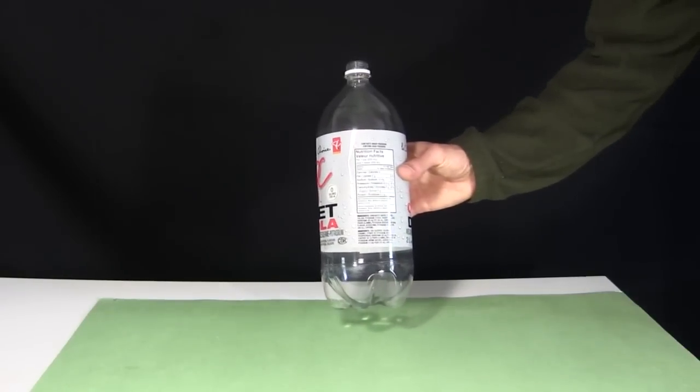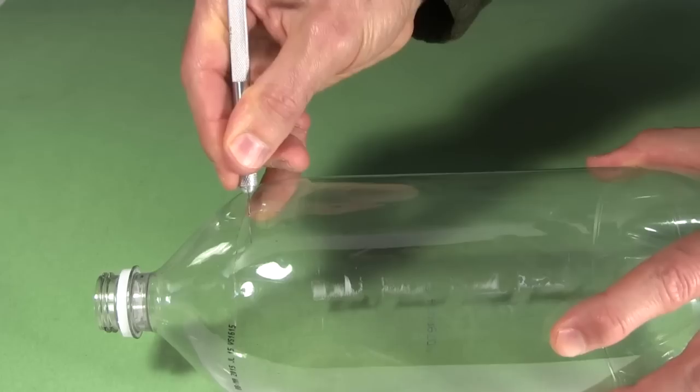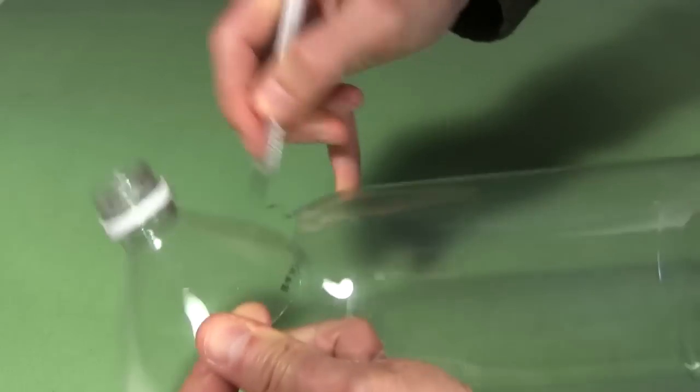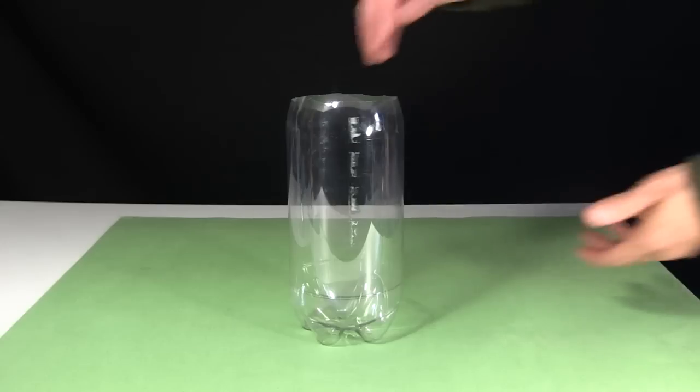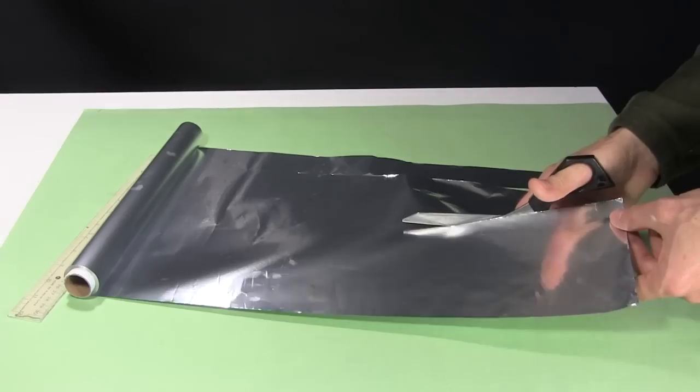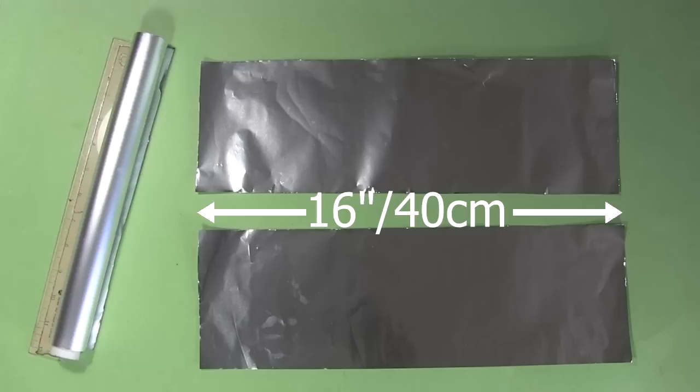Start with a 2 liter or 2 quart soda bottle. Remove the label and cut off the top. Cut it as high as you can while still leaving a big enough hole to easily fit your hand in. Cut two strips of kitchen aluminum foil around 16 inches or 40 cm long and 5 inches or 13 cm wide.